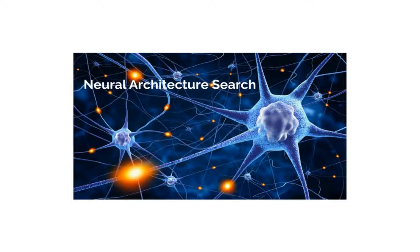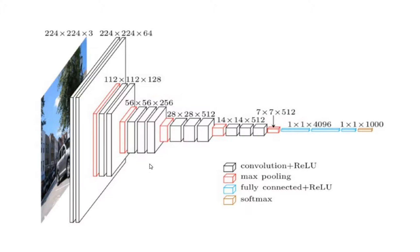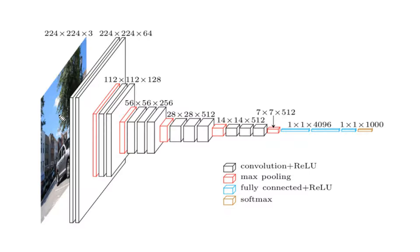Hello everyone. Today we will discuss neural architecture search. Before that, let's discuss how a CNN architecture is defined. As we can see in the VGG network, we have different types of layers, and these different layers will learn different things. The first layers will learn about edges and curves in the picture, and this information feeds into the next layers, which learn more general things — until the last layers learn what a car or building looks like.